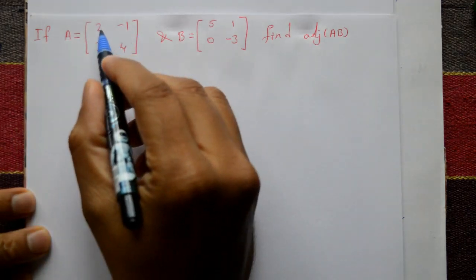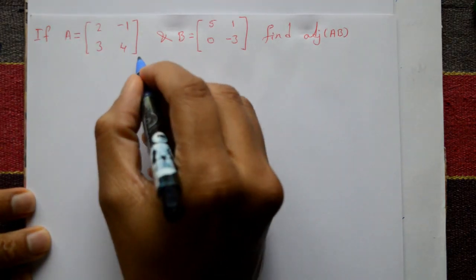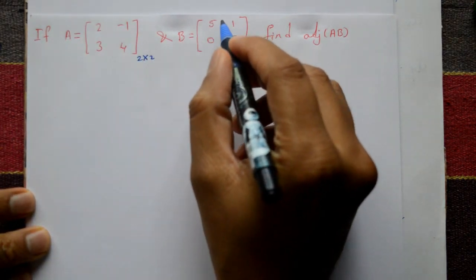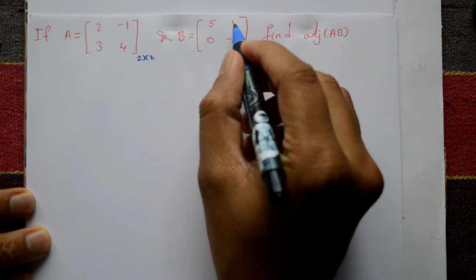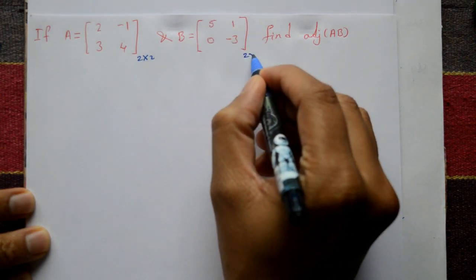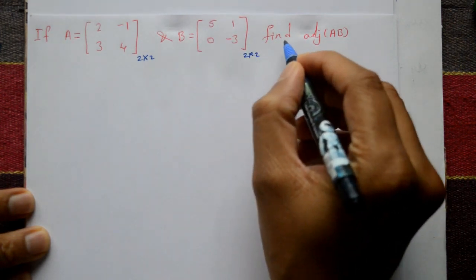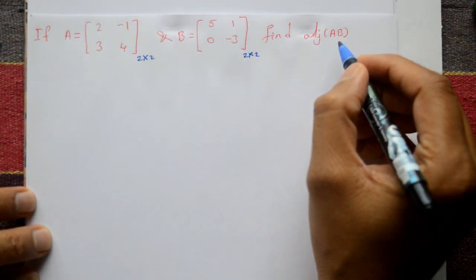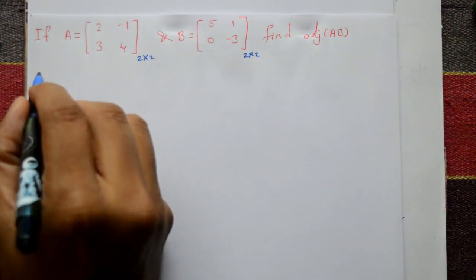If matrix A is equal to 2, minus 1, 3, 4 — this is a 2×2 matrix — and B is equal to 5, 1, 0, minus 3, also 2×2, find the adjoint of AB.